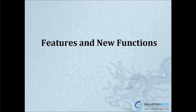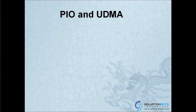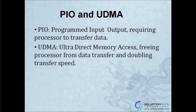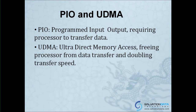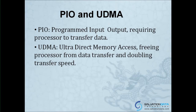Now I'm going to take you through several features of the DataCampus. The first new function is PIO and UDMA, which is a speed switch between fast speed and slow speed. PIO is slow speed and UDMA is fast speed. Technically, PIO is program input-output, requiring procedures to transfer data. UDMA is ultra-direct memory access, freeing the processor from data transfer and doubling the transfer speed. Basically, it's just the difference between speeds — one is faster, one is slow.